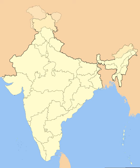India is a federal union comprising 29 states and 7 union territories, for a total of 36 entities. The states and union territories are further subdivided into districts and smaller administrative divisions.